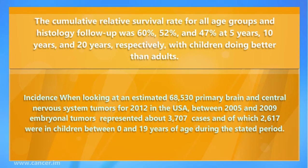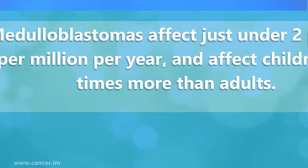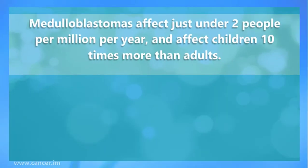Looking at an estimated 68,530 primary brain and central nervous system tumors for 2012 in the USA, between 2005 and 2009, embryonal tumors represented about 3,707 cases, of which 2,617 were in children between 0 and 19 years of age.